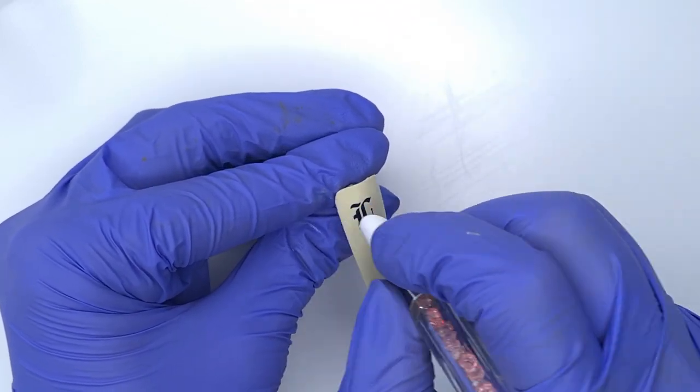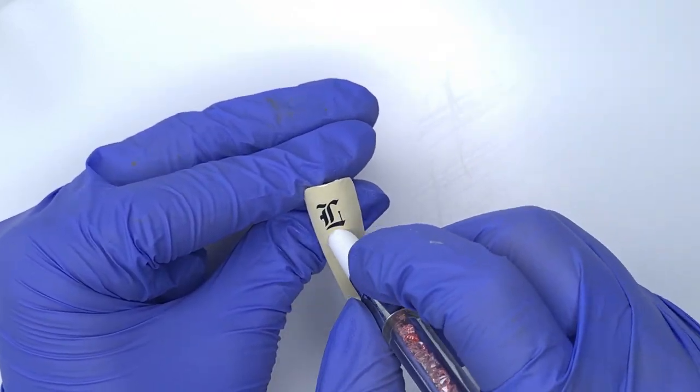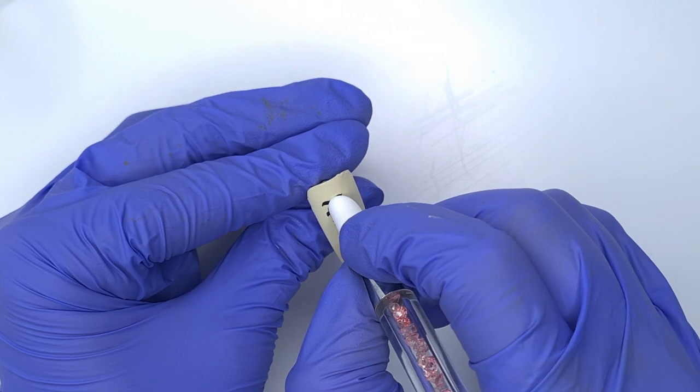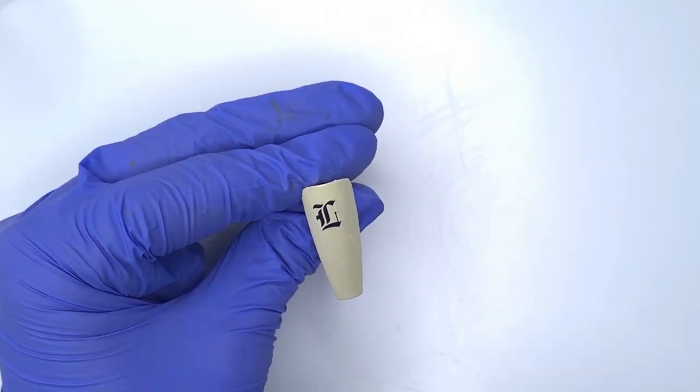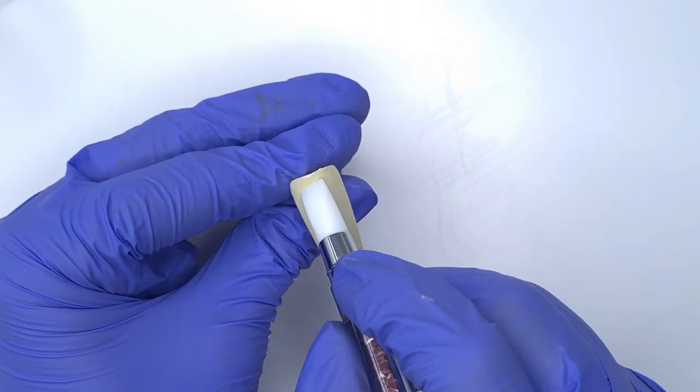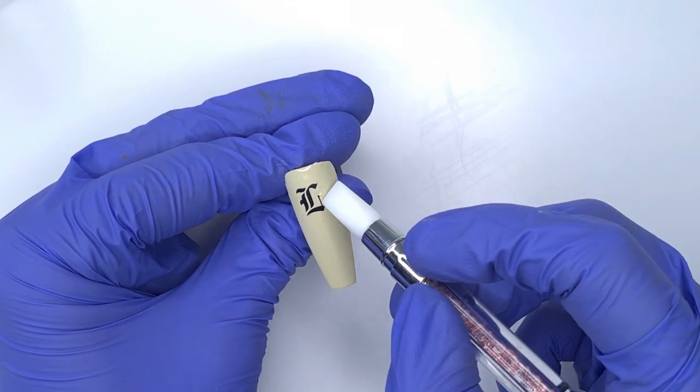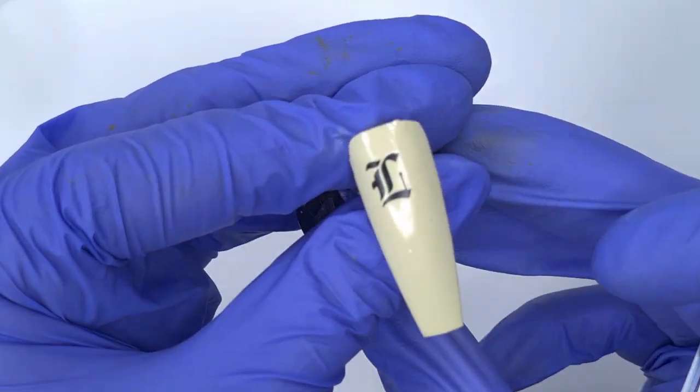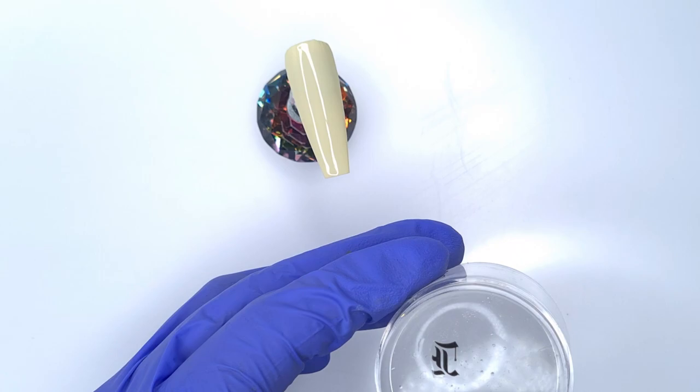If you haven't placed your water decal in the right position you are able to lift it up with some tweezers and reposition it but it can be a little bit tricky but I do find that placing it down with the stamper you're able to 99% of the time accurately get it where you want it to be on that nail. And then always take the time to squeeze out any bubbles or any creases as these are noticeable when it comes to top coating so make sure you do smooth that water decal out.